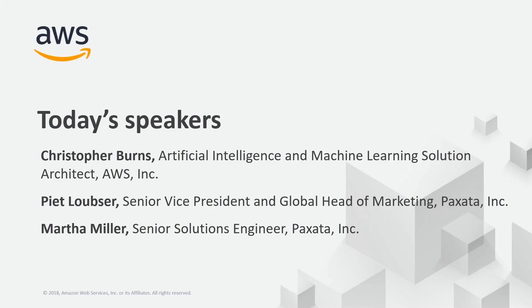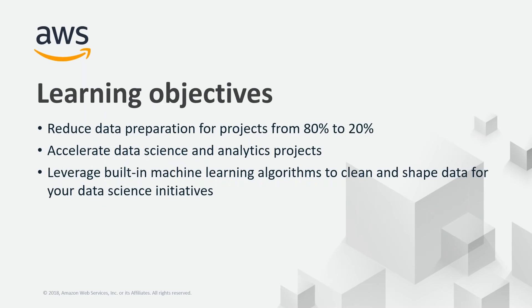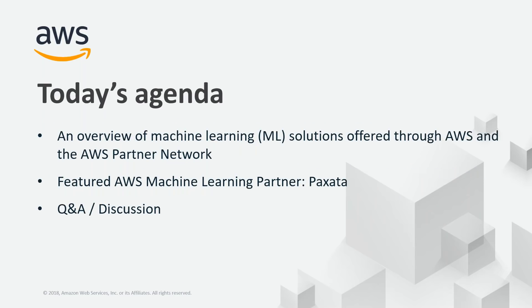Before we get to the partner, I want to briefly touch on today's agenda as well as our learning objectives. The agenda is we're going to give you an overview of machine learning on AWS, as well as how it affects our AWS partner network. We're going to hear from Paxata right after that, and then finally we're going to do a Q&A session at the end. So if you have questions, get them into that box.